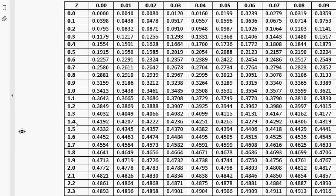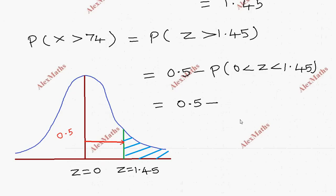From the z-table, we find that for z = 1.45, the value is 0.4265. After subtraction from 0.5, we get 0.0735. This is the probability.